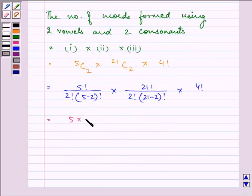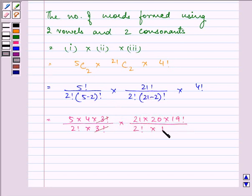That is 5 × 4 × 3 factorial divided by 2 factorial × 3 factorial. 21 factorial can be written as 21 × 20 × 19 factorial divided by 2 factorial × 19 factorial, times 4 factorial.